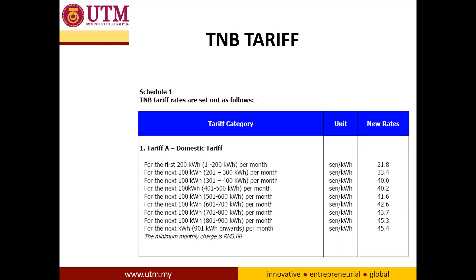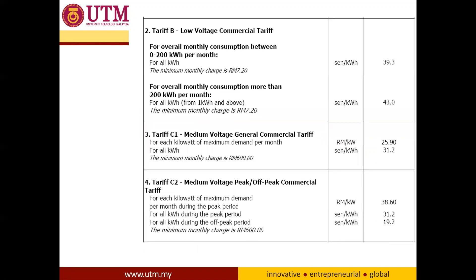Tariff A is mostly for residential consumers. For the first 200 kilowatt-hours, the rate is around 21 cents. Above that, the charge increases, and it increases further with higher usage.